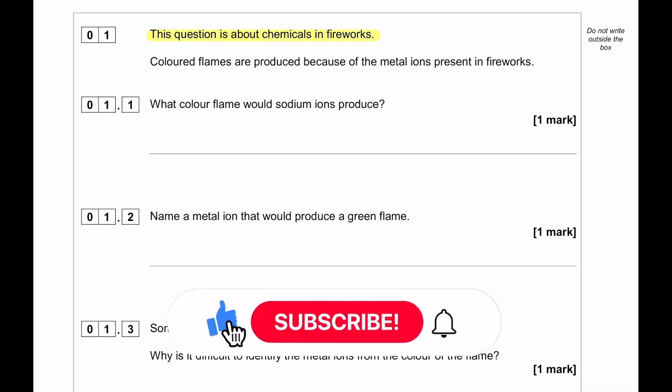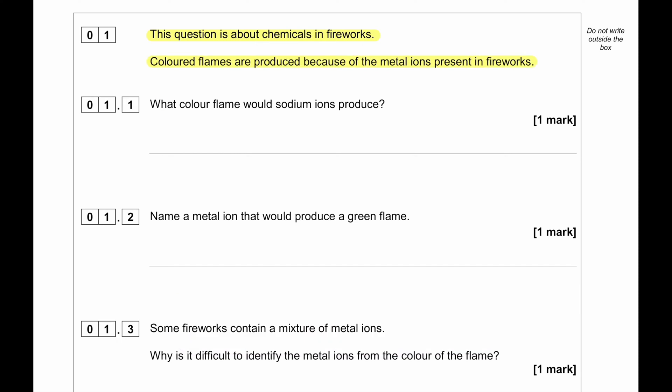This question is about chemicals in fireworks. Colored flames are produced because of the metal ions present in fireworks. What color flame would sodium ions produce? Sodium ion produces yellow flame. Name a metal ion that would produce a green flame. We know that copper ions produces green flame. If you're talking specifically then it will be copper 2 plus.